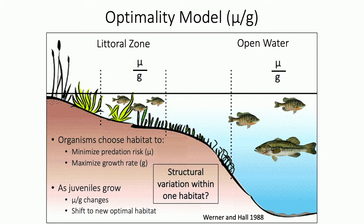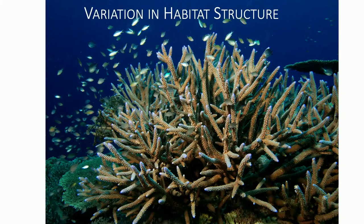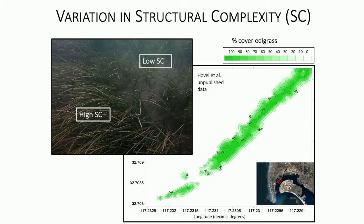Oftentimes when we think about the value of a habitat, we assign one value to the whole habitat, but we know there's a lot of structural variation within a habitat. At small scales, variation in structural complexity may be really important in mediating the value of a given habitat in terms of seeking refuge while foraging. For example, small interstitial spaces may provide important refuge for small individuals, but once those individuals get to a certain size, it may actually inhibit foraging abilities — like a bull in a china shop. Within nursery habitats like seagrass beds, substantial variation in structural complexity or shoot density can exist, as shown in this habitat map of San Diego Bay where darker green colors indicate higher shoot density.